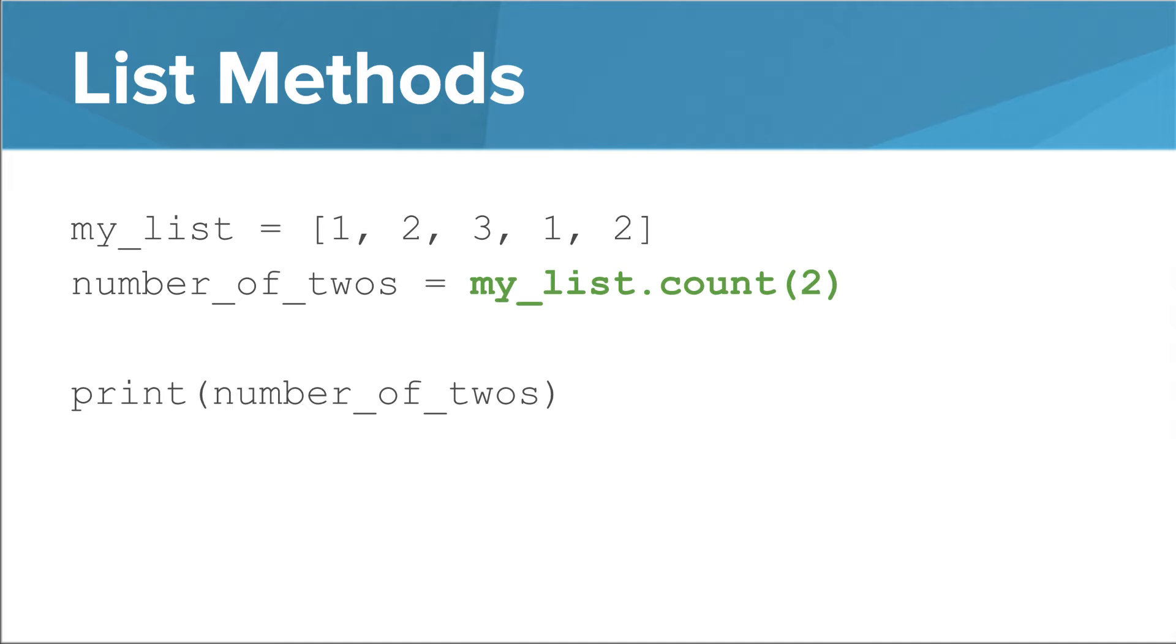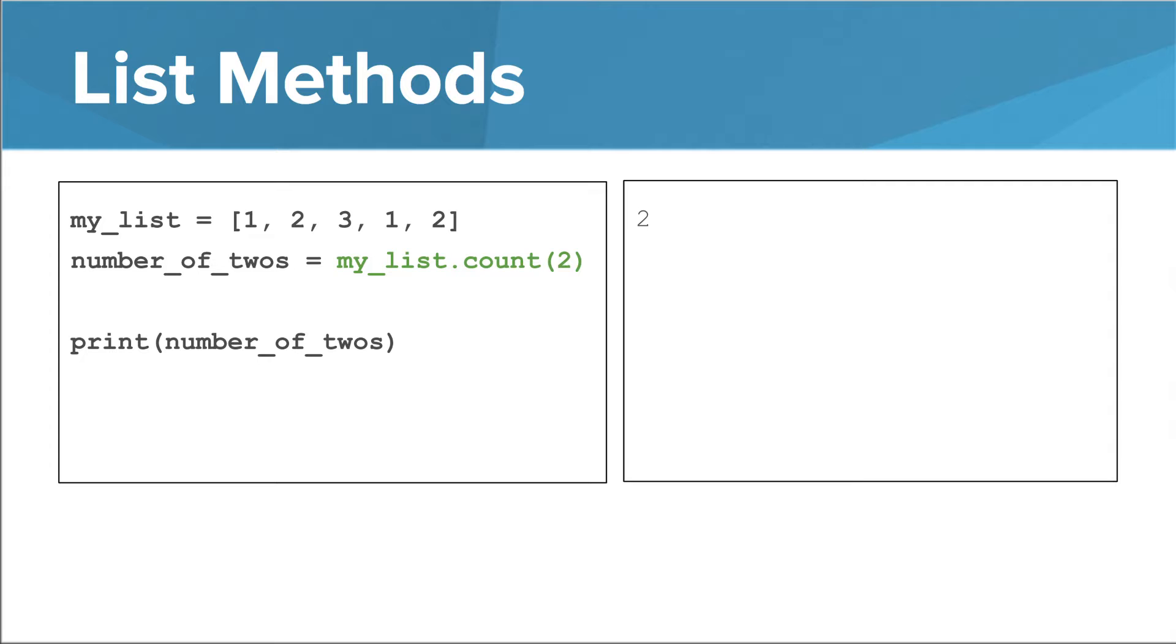Lists also have methods. Here's a pretty simple one, count. You call it like this, and it returns the number of times the argument occurs in the list. So in this case, the number two occurs twice in the list, so count returns two.